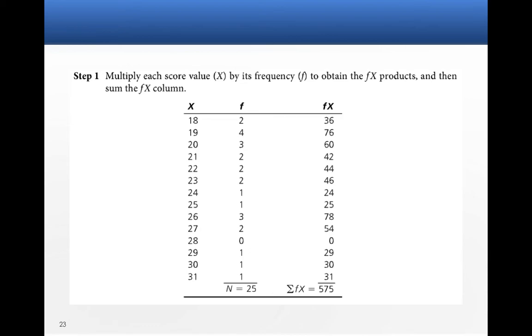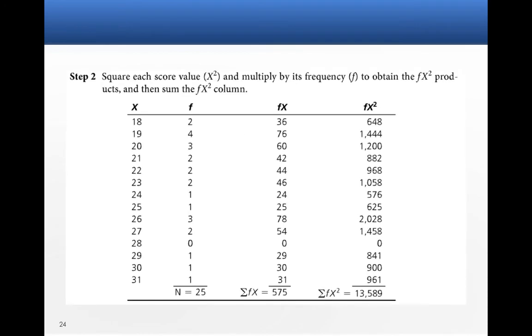So what we're going to do is we're going to times f by x. So 36, 76, 60. We sum those together. That gives us 575. We're also then going to square f of x. F times x. That gives us 13,589.